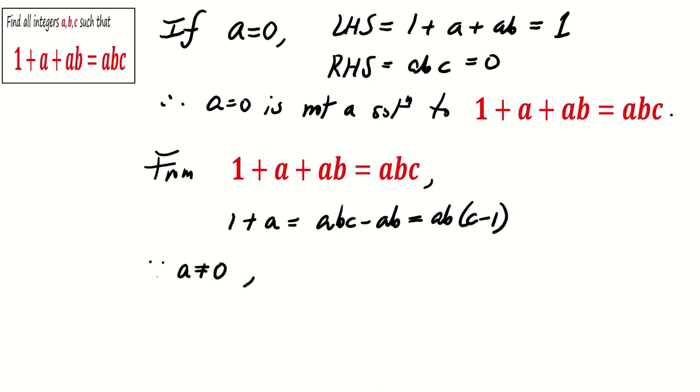dividing both sides by a gives (1/a) + 1 = b(c - 1), which clearly is an integer, which means that a = ±1.